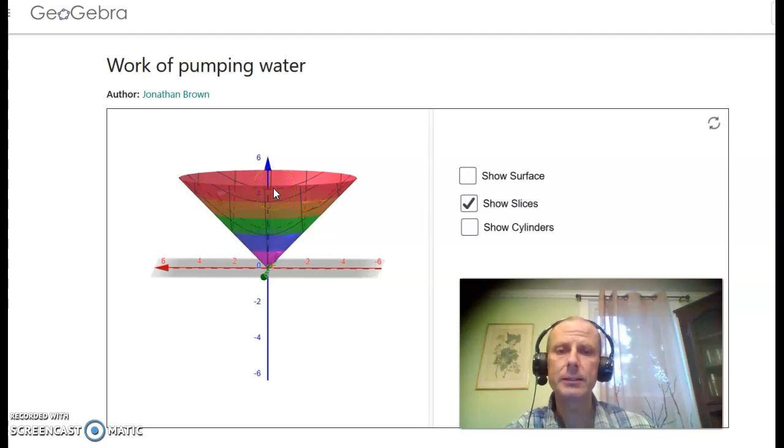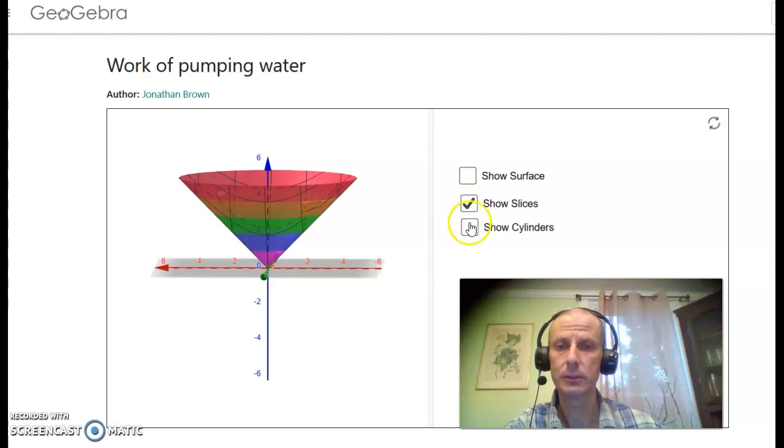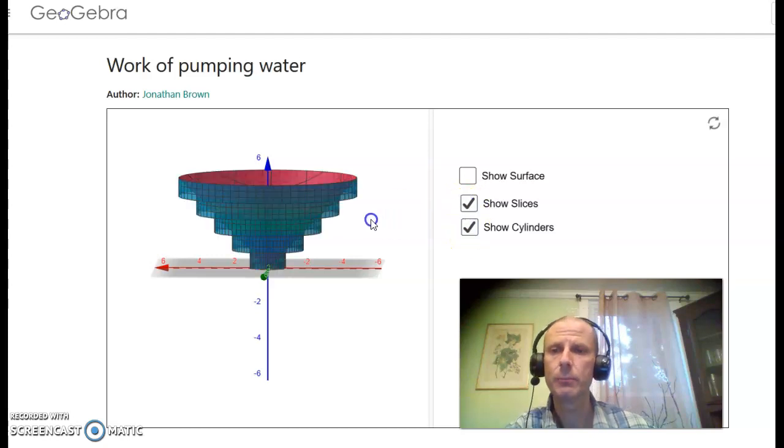To make things a little bit simpler, technically each of these slabs of water is something we call a frustum, but it'll be easier if we approximate it with a cylinder. Cylinders are nice because they're pretty easy to calculate the volume of. It's just the base times the height, and the base has area pi r squared, so it's just pi r squared times the height. Then we can calculate how far each of these cylinders has to get pumped up to be at the top, and use that to find the work to empty the basin.